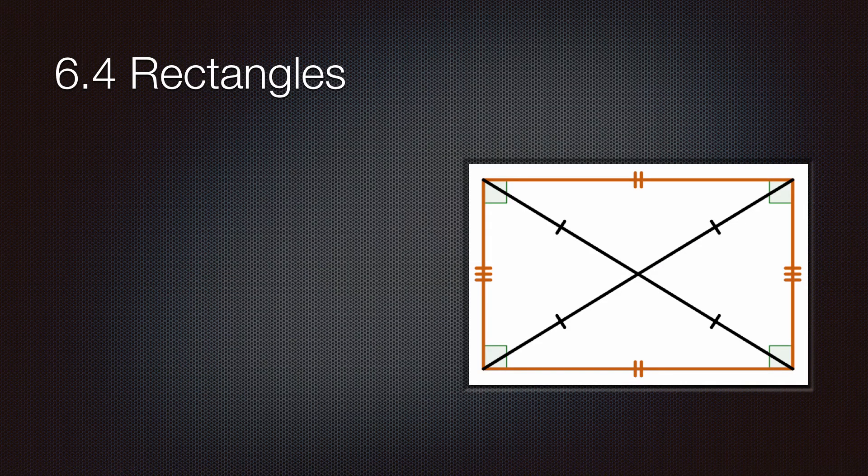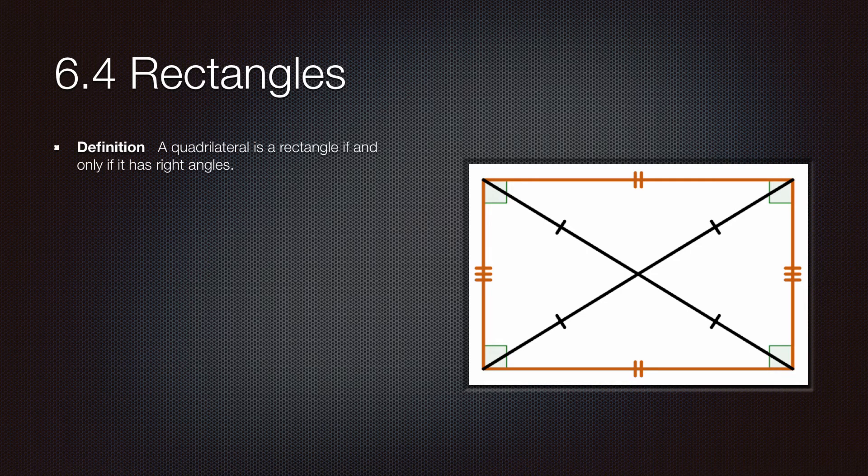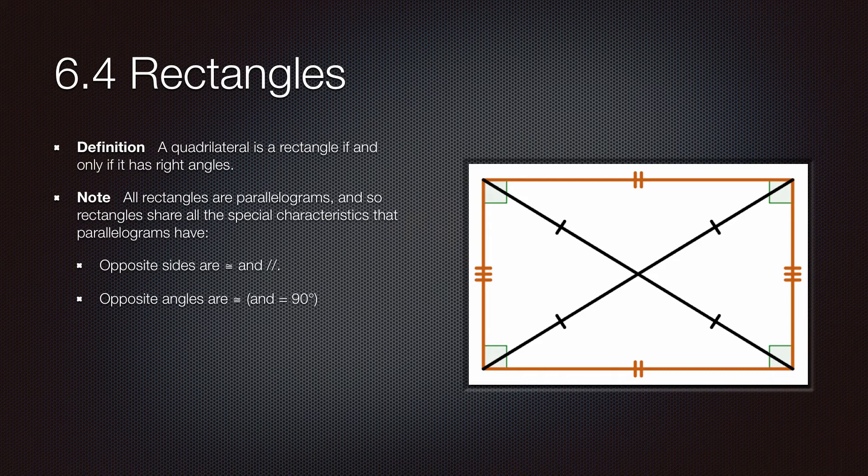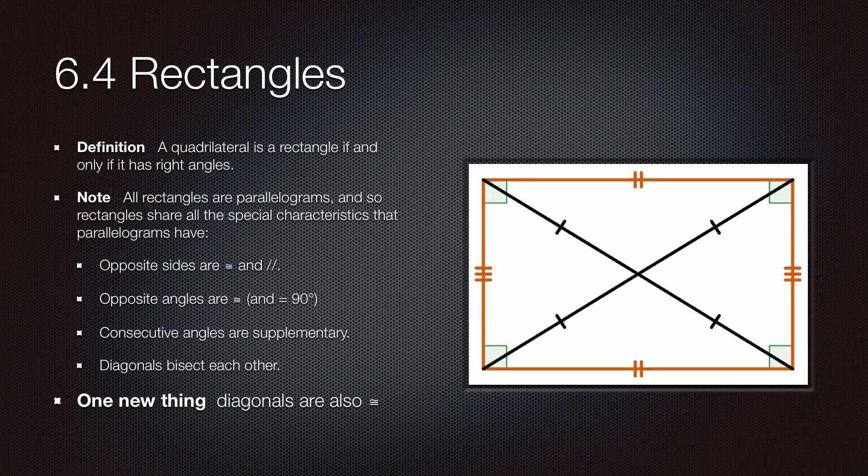So, rectangles. What are they? The definition of a rectangle is a quadrilateral is a rectangle if and only if it has right angles. All rectangles are parallelograms, and so all rectangles have the same special characteristics that parallelograms have. We know that opposite sides are both congruent and parallel. We know that opposite angles are congruent, and by the way, all the angles are 90 degrees. We know that consecutive angles are supplementary, which again seems obvious since they're all 90 degrees. The diagonals bisect each other. And then one new thing, one additional characteristic, is that the diagonals are equal in length. They're congruent.